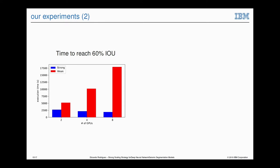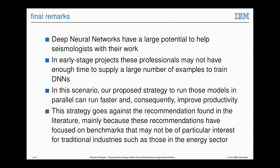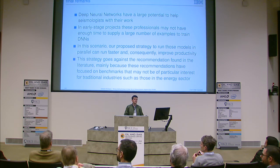We should measure time to accuracy — that's the right metric. If you establish a threshold like 60% IoU, the picture is completely different: running weak scaling is much worse when you increase the number of GPUs, because it takes way longer to achieve the target accuracy. As a final remark, we found that for seismic segmentation, the weak scaling strategy — increasing batch size with more GPUs — was actually harmful.